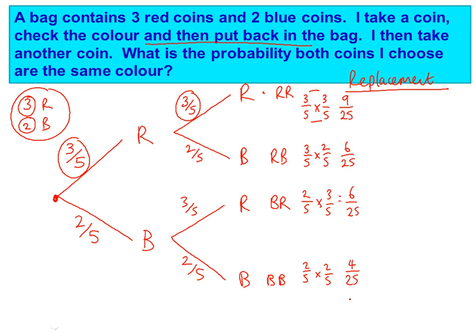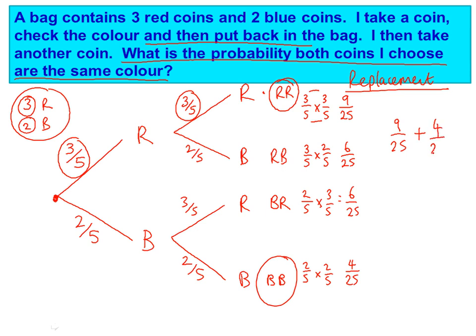Now we just need to read the question. It says: what is the probability both coins I choose are the same colour? That would be red, red — nine out of 25 — and also blue, blue at the bottom, which is four out of 25. So we've got to add these two fractions together. The denominator 25 stays on the bottom because it's the same, and nine add four on the top gives us 13. So the probability of picking two of the same colour is 13 out of 25. We have to make sure we read the question carefully — here it was two of the same colour, so it was red, red and blue, blue.